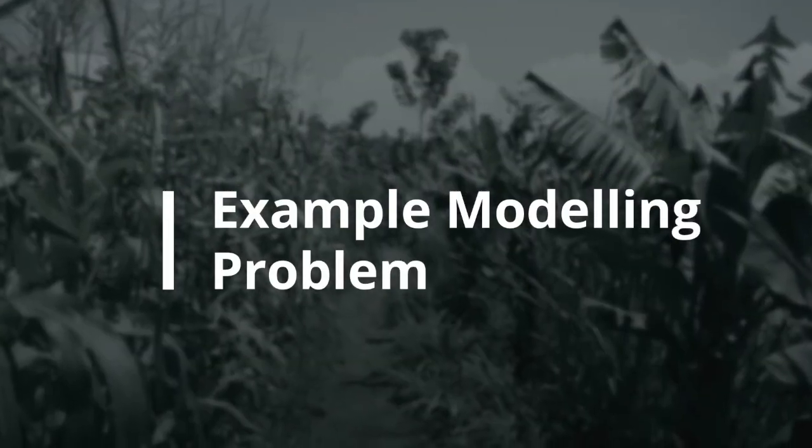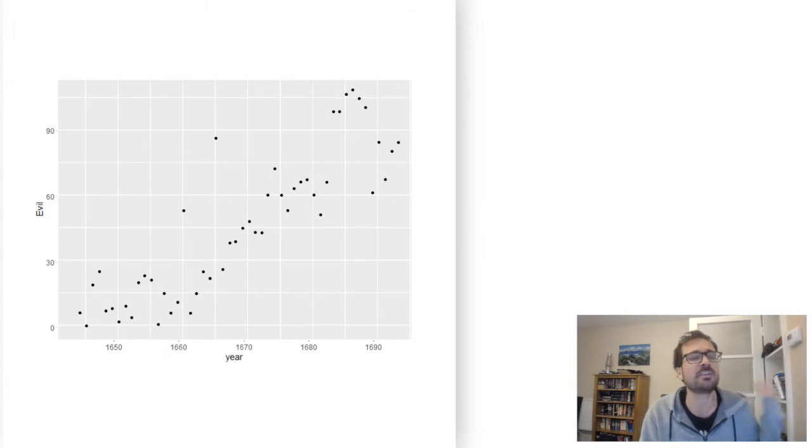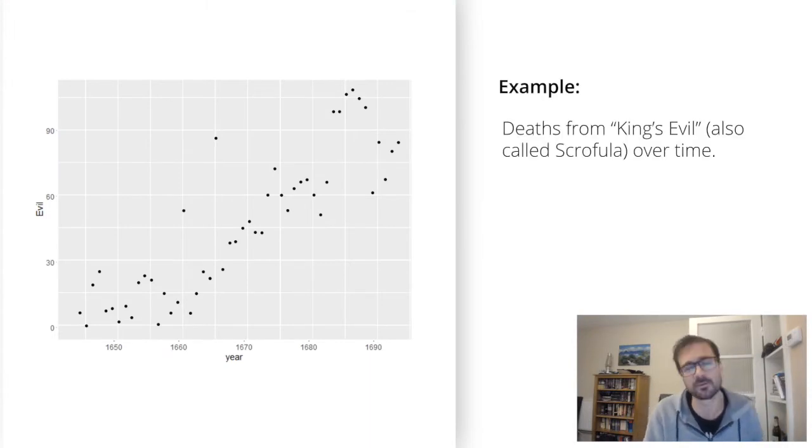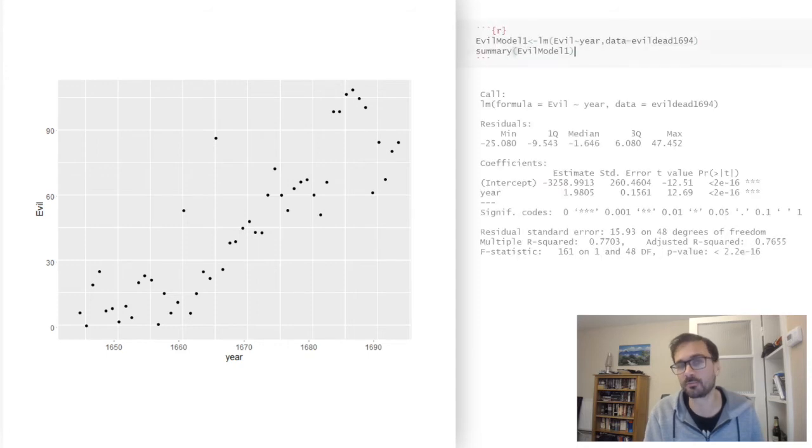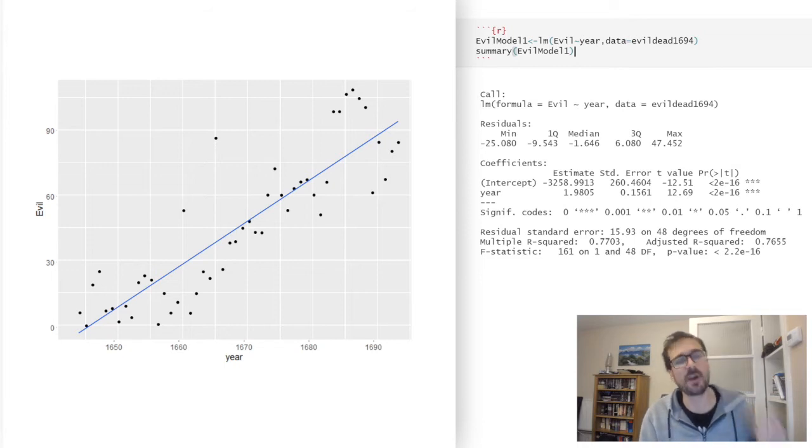Let me give you an example of a modelling problem here. On my y-axis, this is cases of a particular disease from London in the 17th century. If we're looking at our scatter plot here, it seems pretty clear that we're seeing an increasing trend. It wouldn't be unreasonable to draw a straight line for it and have a simple linear regression model. We'll talk a little bit more about the R code to produce these plots and to summarise the model.